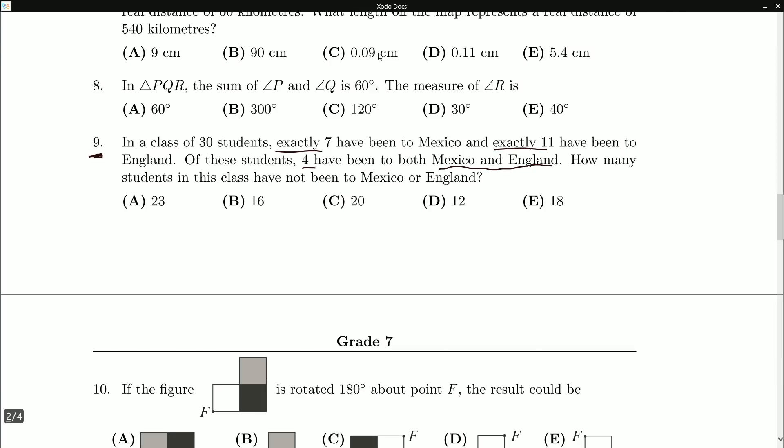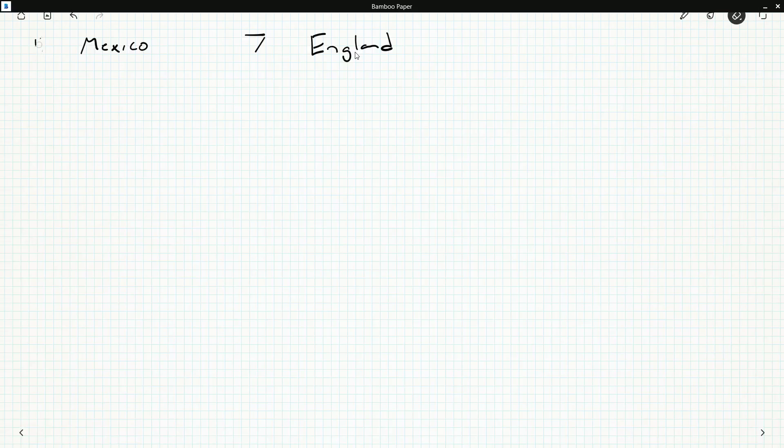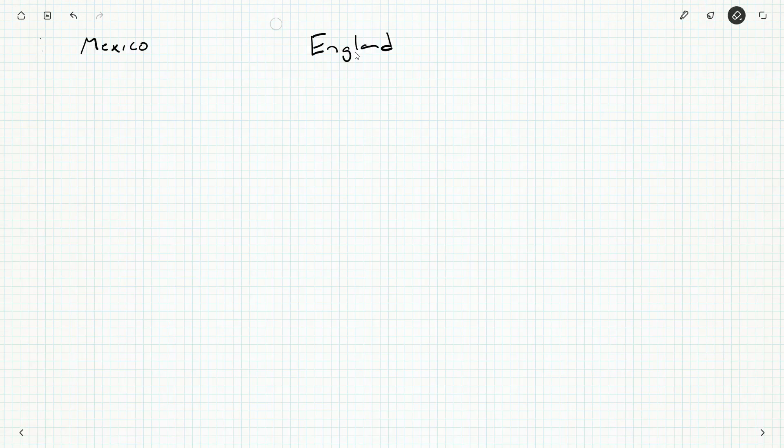So I know 7 have been to Mexico... or did I get the order of those wrong? I feel like I got the order of them wrong. Yeah, seven have been to Mexico, 11 were to England. Okay, now four have been to both. So we might even represent this as a little bit of a Venn diagram. The people have been to Mexico, the people have been to England.